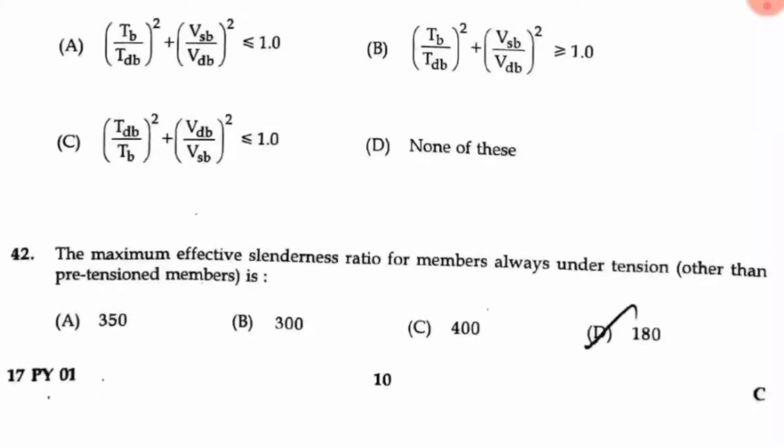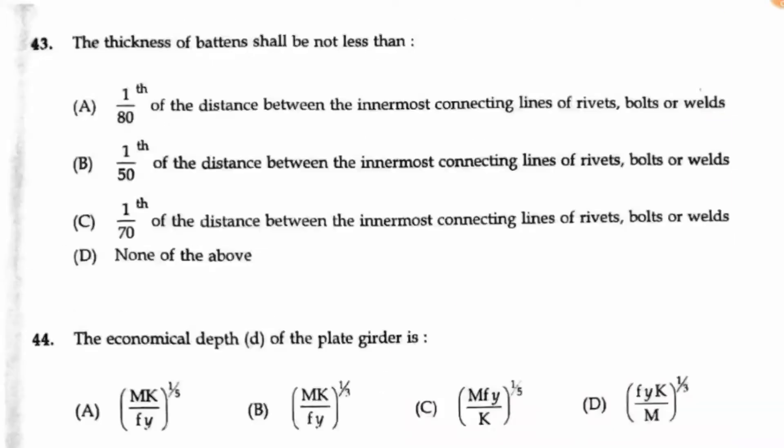Question 42: The maximum effective slenderness ratio for members always under tension, other than pretension members, is option C, that is 400. Question 43: The thickness of battens shall be not less than...